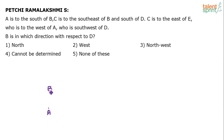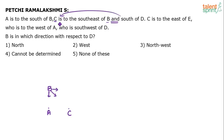Southeast of B: south is this way, east is this way, southeast is somewhere in the middle. C is to the southeast of B — but again, how far away is not known. Let's assume C is here. Now C is also to the south of D, which means D will be on the north of C. How far away is not known, so let's assume D is here. You can see C is on the south of D.